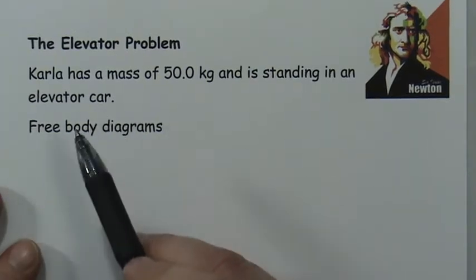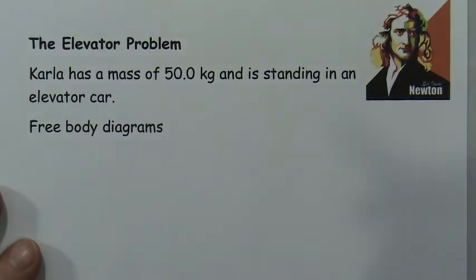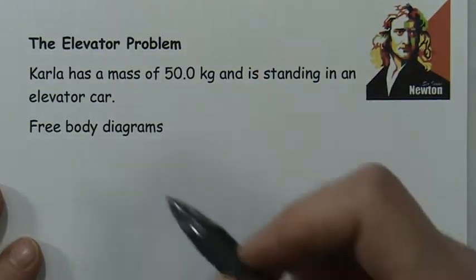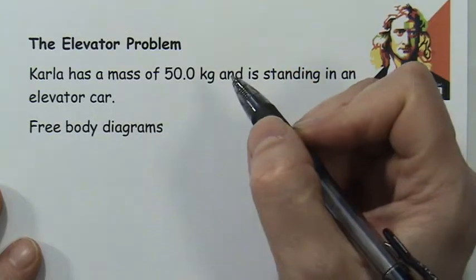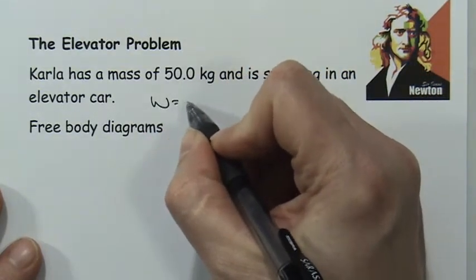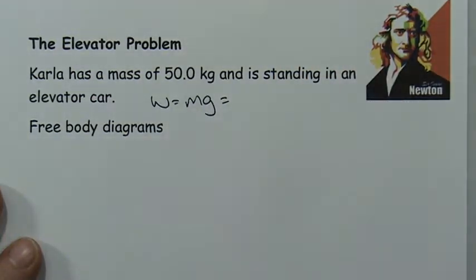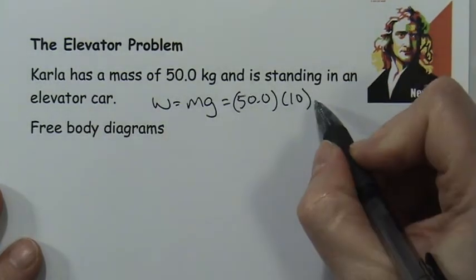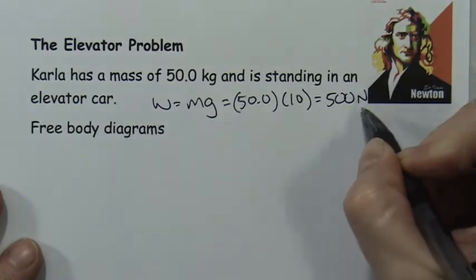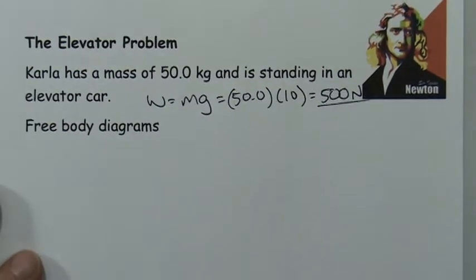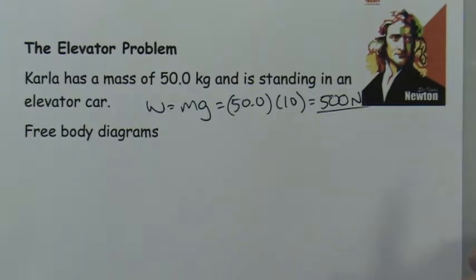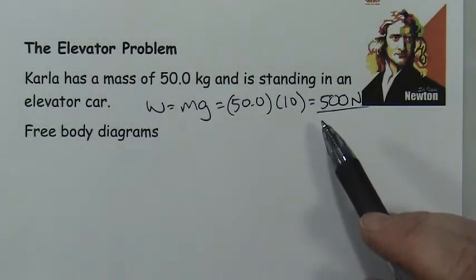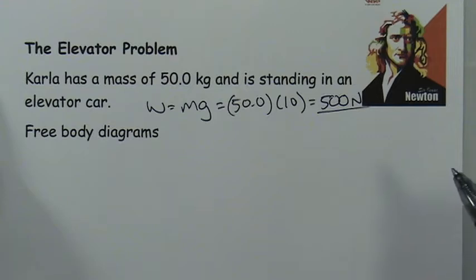For this particular problem we're going to use Carla, who has a mass of 50 kilograms, simply standing inside an elevator car. We'll calculate her weight using g = 10 for simplicity — you can use 9.8 and it won't make a huge difference. Carla's weight is 500 newtons. Any time we see W we'll replace it with 500. Her weight is not going to change based on whether she's going up or down in the elevator.